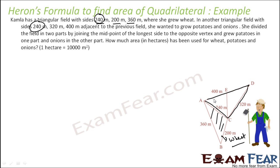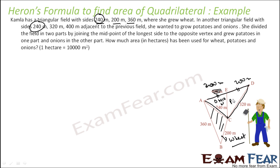In the bigger field, she wants to grow both potato and onion, so she has to divide this field into two parts by joining the midpoint of the longest side (which is 400) to the opposite vertex. Since the total was 400, each half becomes 200. So this midpoint divides the base into two equal parts of 200 each. In one part she cultivated onion and in the other part she grew potato.